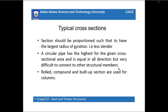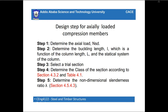The design steps for axial load compression members are as follows. Step 1: determine the axial load. Step 2: determine the buckling length, which is a function of the column length and the support system. Step 3: select a trial section. Step 4: determine the class of cross section according to EC3 from the four classes. Step 5: determine the non-dimensional slenderness ratio.